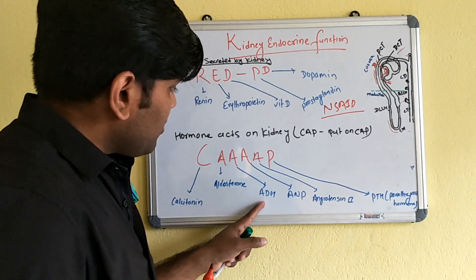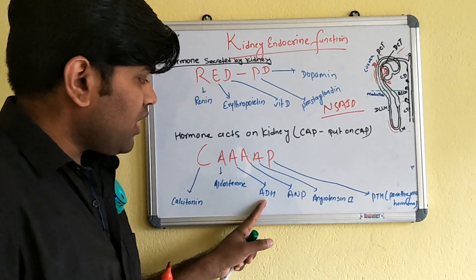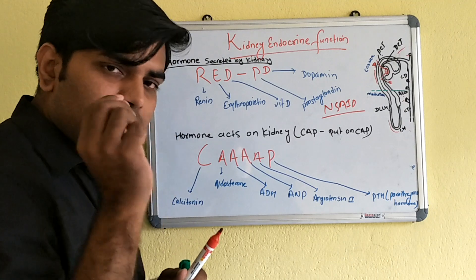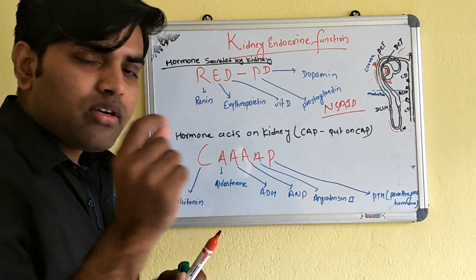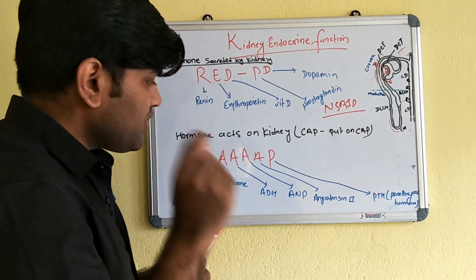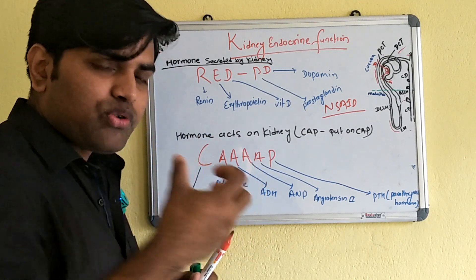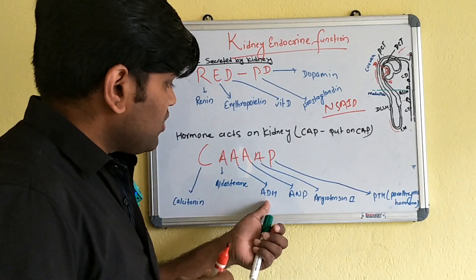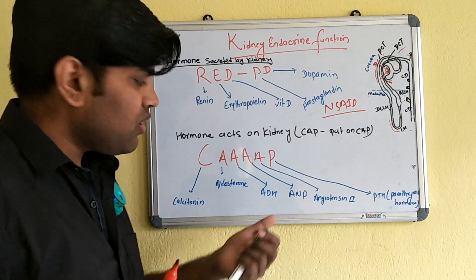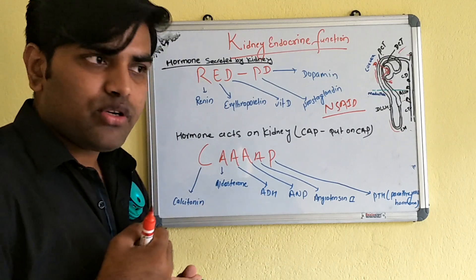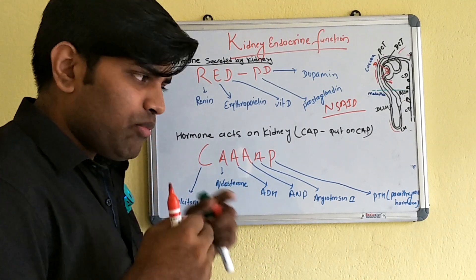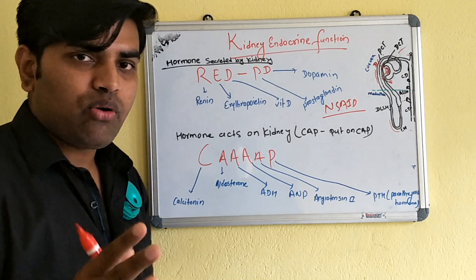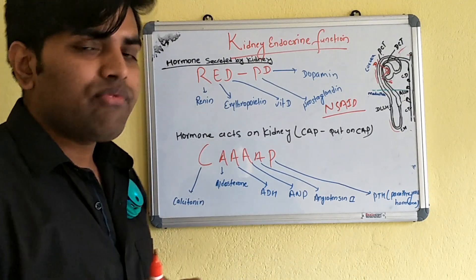ADH — antidiuretic hormone — is released from the posterior pituitary and acts on the collecting ducts, where it creates water channels (aquaporins). Through these water channels, water is reabsorbed via the medullary osmotic gradient. ADH is released in response to increased plasma osmolarity or decreased blood volume.